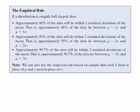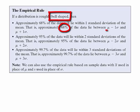The empirical rule: if a distribution is roughly bell-shaped, then approximately 68% of the data will lie within one standard deviation of the mean. That is, approximately 68% of the data will lie between the mean minus one standard deviation and the mean plus one standard deviation.